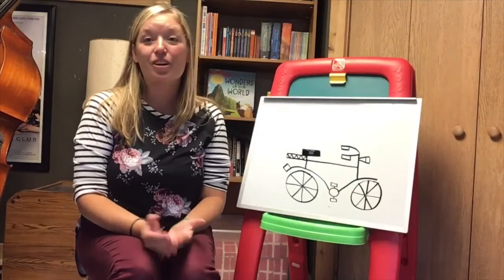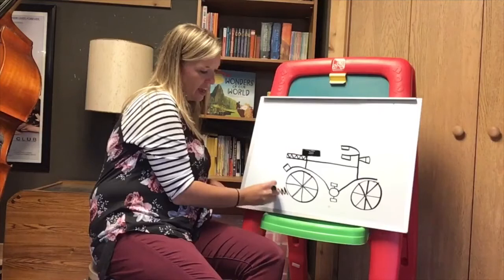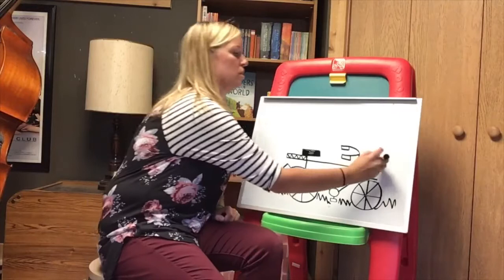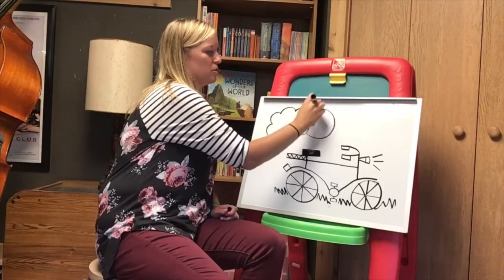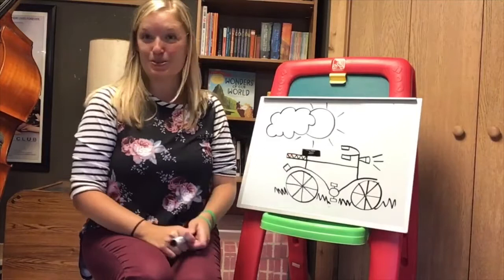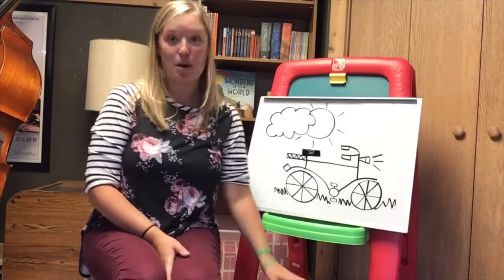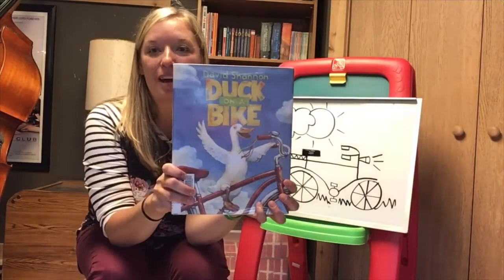All right you did great you could always add some detail you could add some grass maybe Johnny's riding on the grass now you could add the light or the noise from the horn to some lines you could add a background maybe some clouds maybe it's a beautiful day and you want to add the sun add some details to your picture and for those of you who like a traditional story at story time I have one just for you to read and it is called Duck on a Bike and I think I'll move forward a little bit so you can see